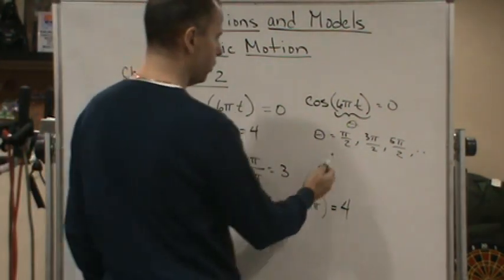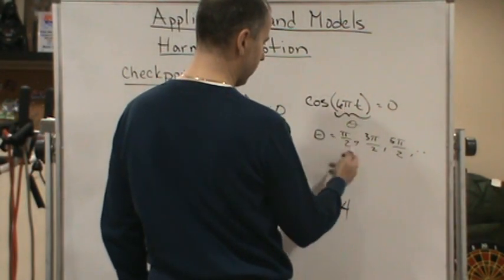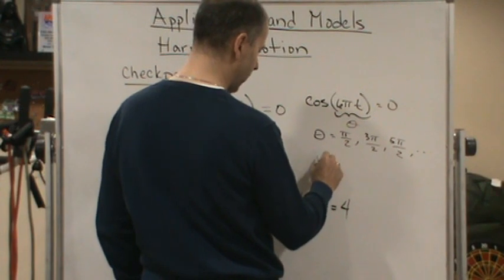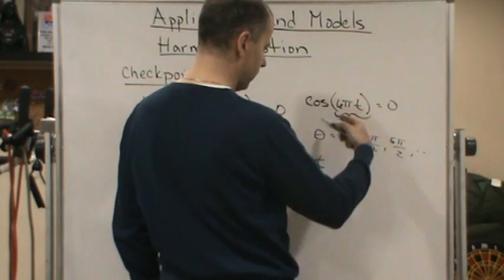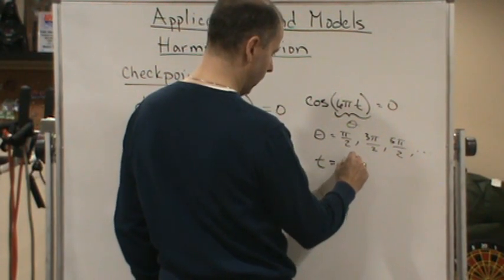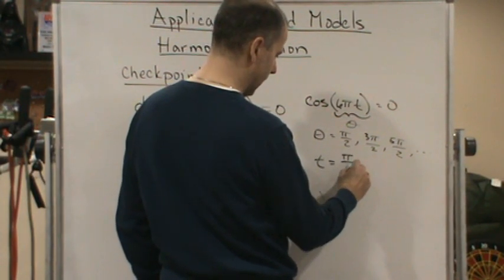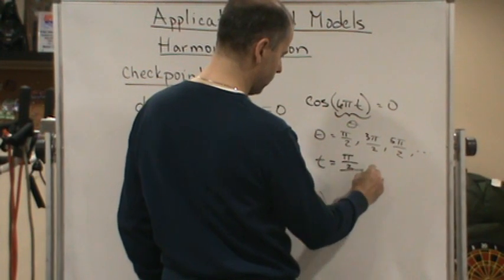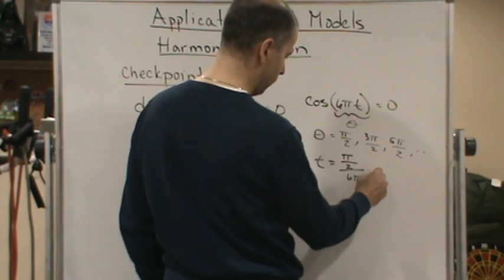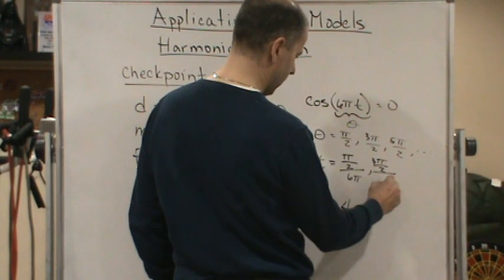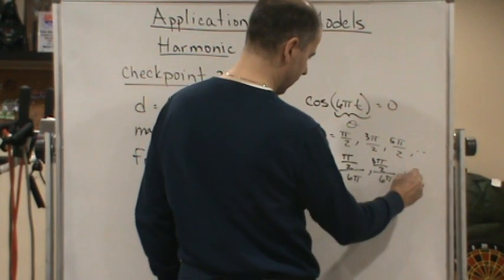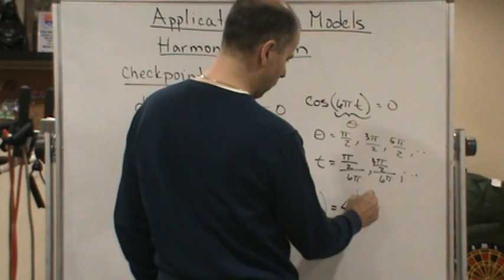So now all we have to do is just divide everything by 6 pi. So that means T is going to be equal to 0. And T is equal to pi over 2 divided by 6 pi, 3 pi over 2 divided by 6 pi, and so on. So what's the first one? Let's just do the first one.